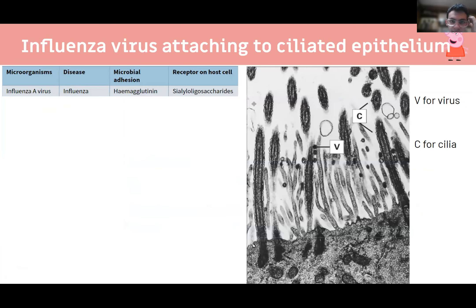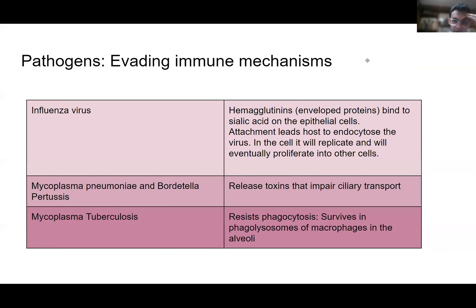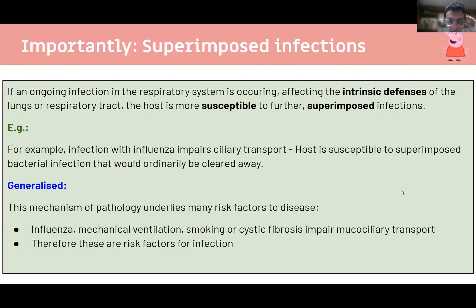Pneumonia is caused by an exudate or collection of inflammatory cells in the alveoli making gas exchange difficult. RSV is a very important cause of bronchiolitis and pneumonia in infants. Influenza infiltrates ciliated epithelium via hemagglutinin, releases proteins, creates more viral particles, and expands to adjacent cells. Superimposed infections are an important concept: an ongoing viral infection damages epithelium and cilia, compromising intrinsic defenses and increasing susceptibility to subsequent bacterial infection. This mechanism underlies many disease risk factors — influenza infection increases susceptibility to superimposed bacterial infections.